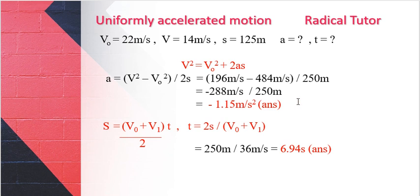Part b: How long did it take the truck driver to change his speed? The distance equals the average of initial and final velocity times time. So 2s equals v-initial plus v-final times t. Therefore t equals 2s divided by v-initial plus v-final, which is 2 times 125 meters divided by 22 plus 14 meters per second, equals 250 divided by 36, equals 6.94 seconds.